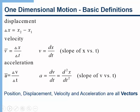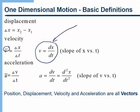Then we defined the instantaneous velocity. Remember that a bar means average. If there's no bar, it's an instantaneous value, meaning a value at a particular time. The instantaneous velocity is the derivative of position versus time, and that simply means it's the slope of the position versus time graph at a particular time. This notation is simply a shorthand way of writing that the instantaneous velocity is really defined as the limit as delta t goes to zero of delta x over delta t. So the instantaneous velocity is the limit of the average velocity as delta t goes to zero.